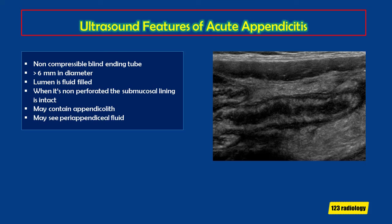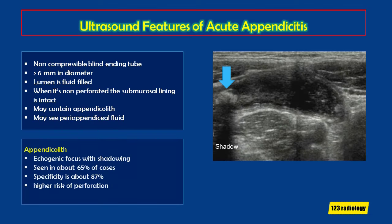Ultrasound features of acute appendicitis: a non-compressible blind-ending tube greater than 6 mm in diameter, fluid-filled; when non-perforated, the submucosal lining is intact. You may see an appendicolith and peri-appendiceal fluid. An appendicolith appears as an echogenic focus with shadowing, seen in about 65% of cases with a specificity of about 87% for acute appendicitis. Importantly, if you see an appendicolith within an inflamed appendix, there is a higher risk of perforation.